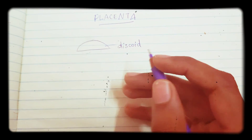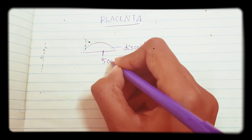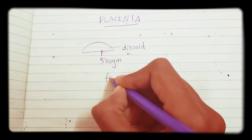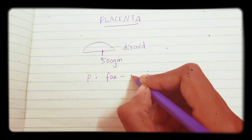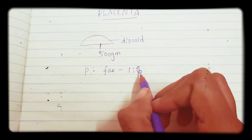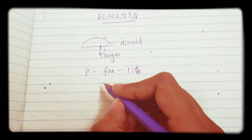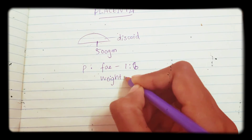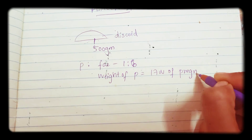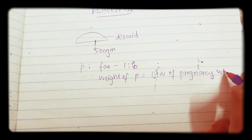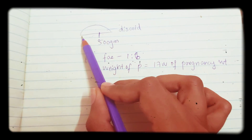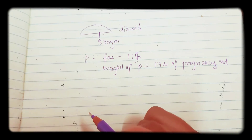The weight of the placenta is about 500 grams. The placental to fetal ratio is about 1 to 7. The weight of the placenta equals the weight of the fetus at 17 weeks of pregnancy. It is in a 1 to 6 ratio with the fetus. So to summarize: it is 500 grams, discoid, hemochorial, and decidual.